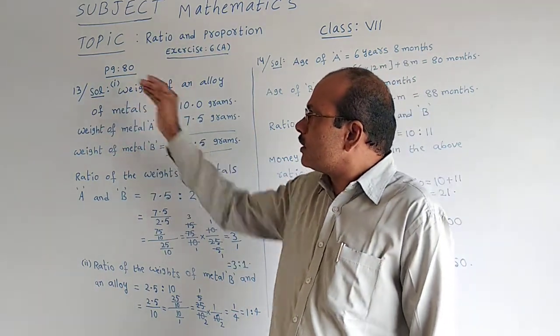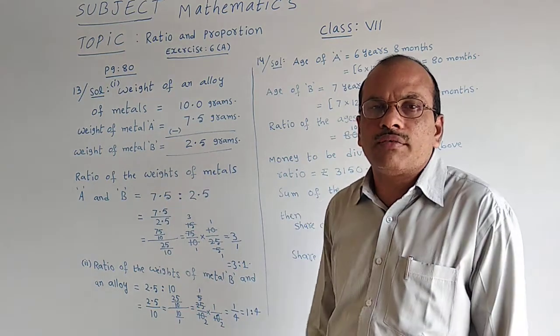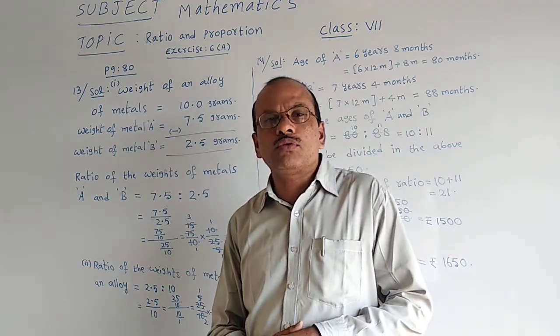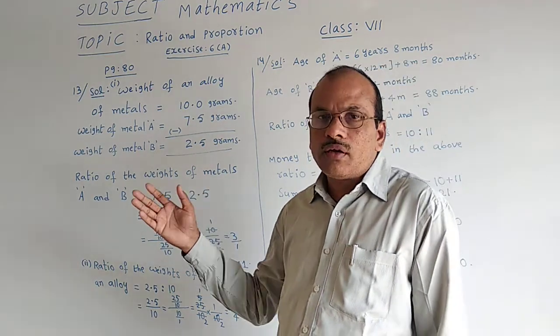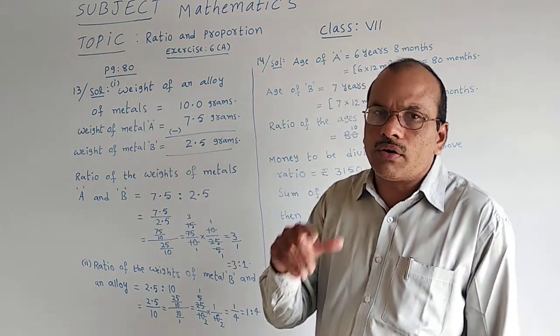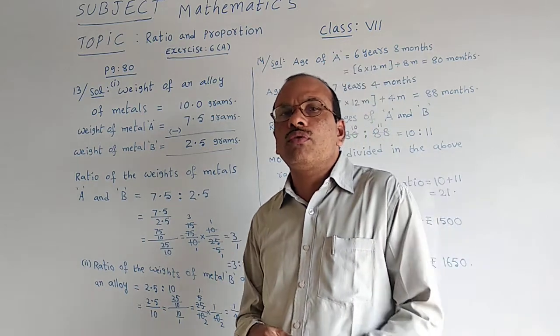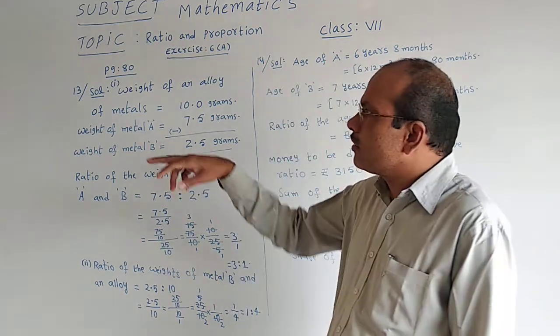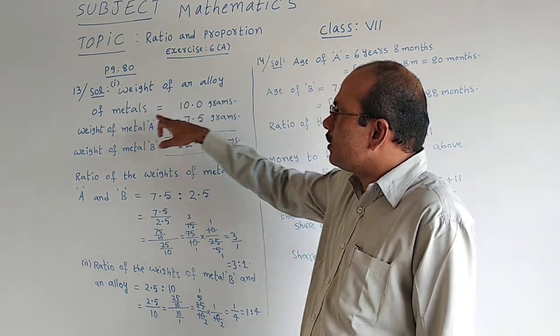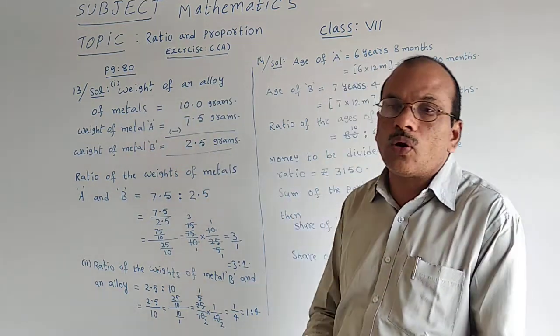Now, in the 13th question, there are two bits given. We have to find the ratio as they have asked. Let us see. In question 13, they have given weight of an alloy of metals. Alloy is the mixture.